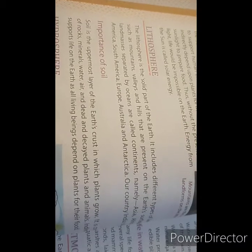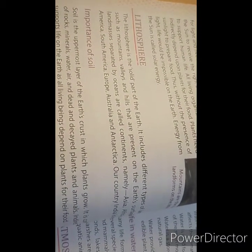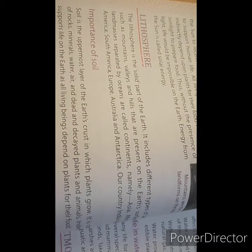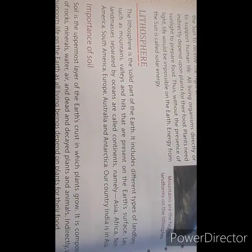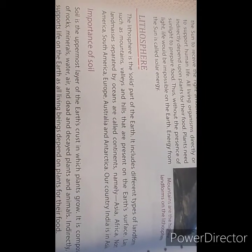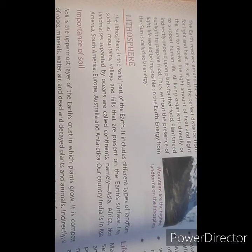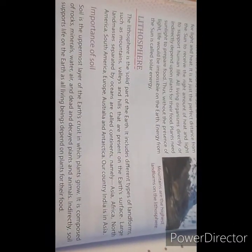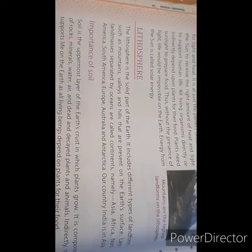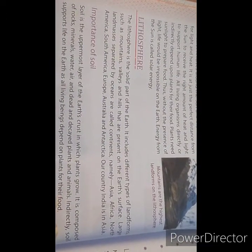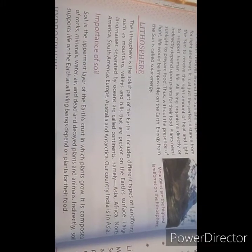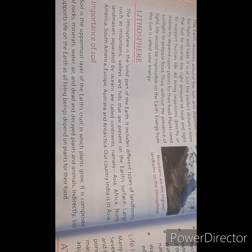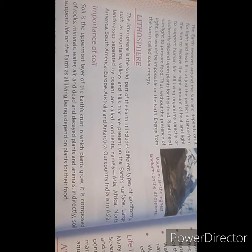Now, lithosphere. Litho means stone. The lithosphere is the solid part of the earth. It includes different types of landforms such as mountains, valleys and hills present on the earth's surface. Large landmasses separated by ocean are called continents — namely Asia, Africa, North America, South America, Europe, Australia and Antarctica. Our country India is in Asia, as you already know.